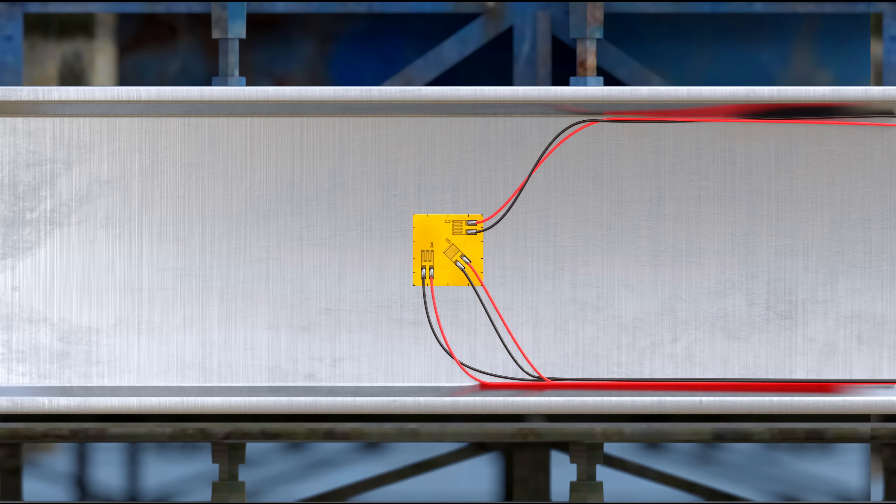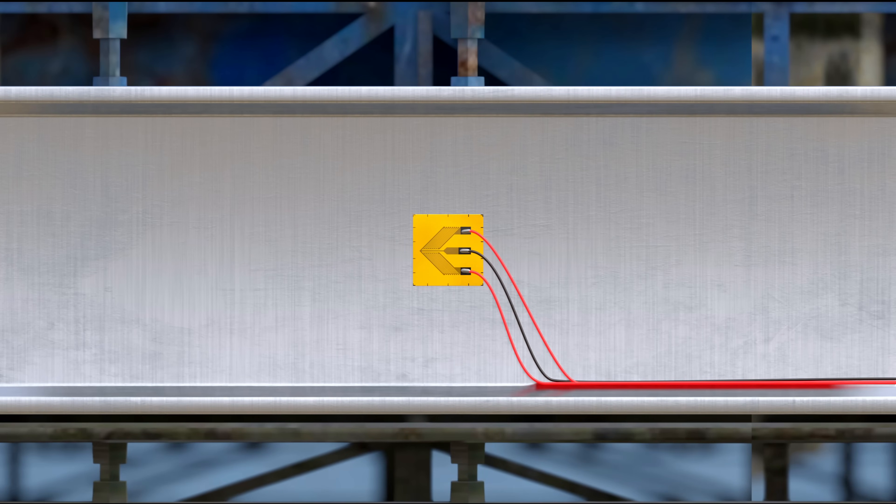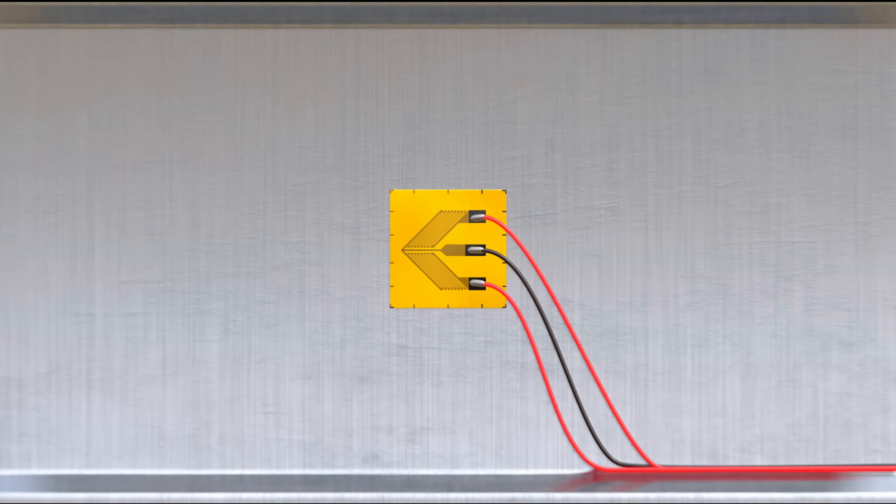Strain gauge rosettes come in many different shapes and sizes. This two gauge rosette, for example, is used to measure shear strain.